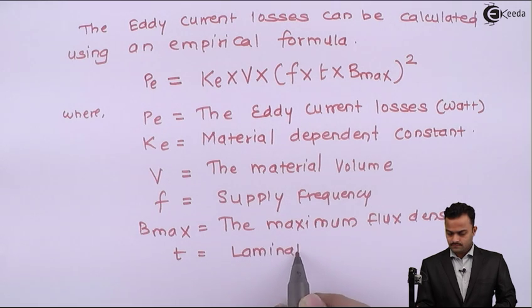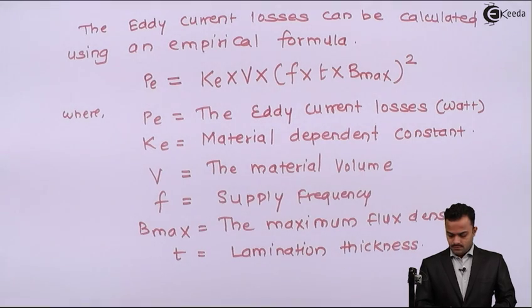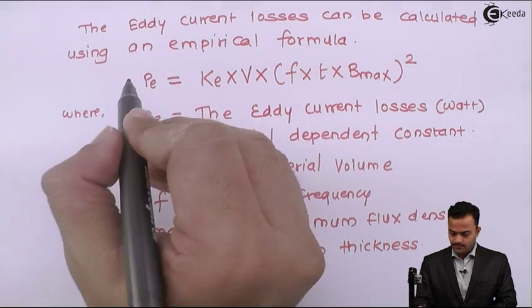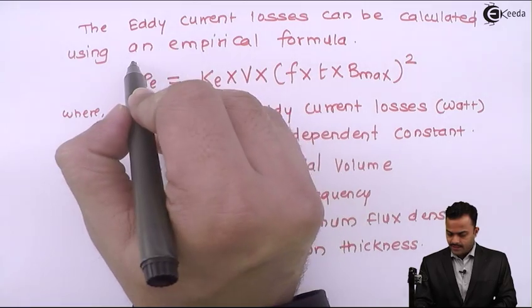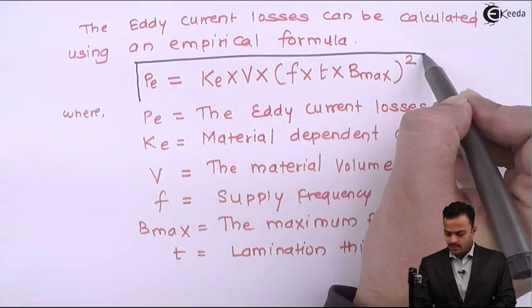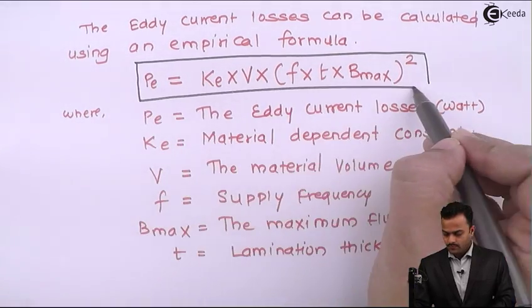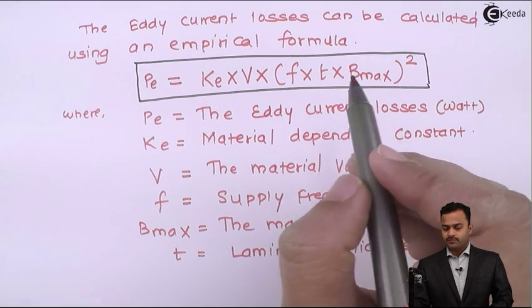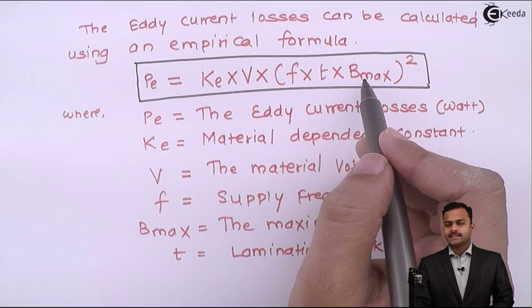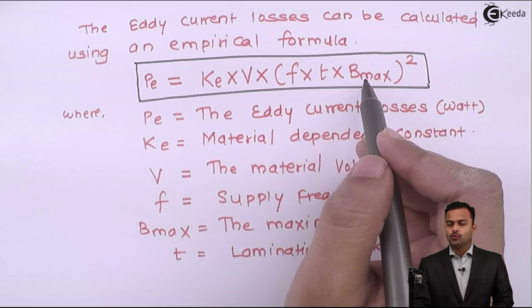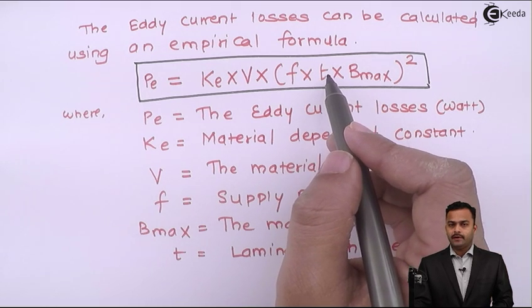So if you see the formula once again, you will come to know that eddy current loss depends on square of the frequency, maximum flux density, and most important, lamination thickness.